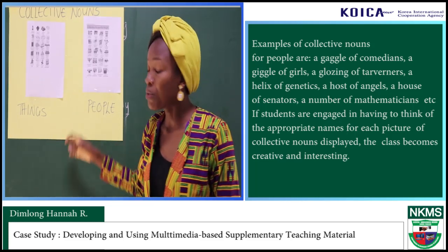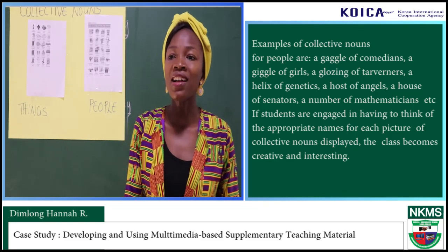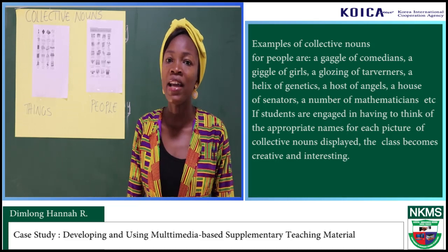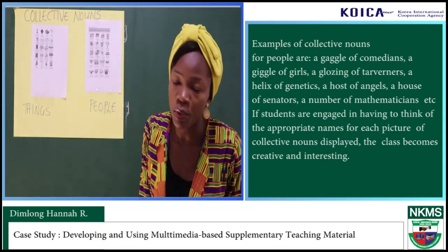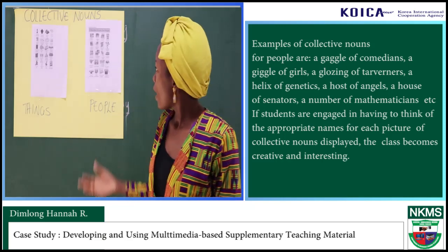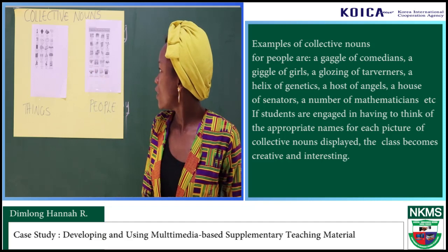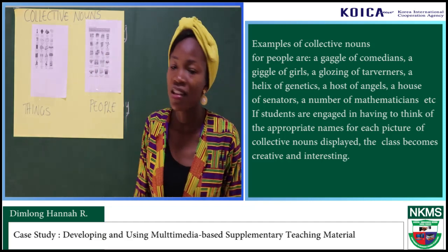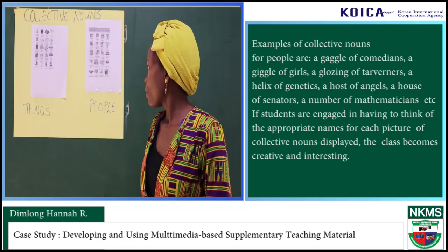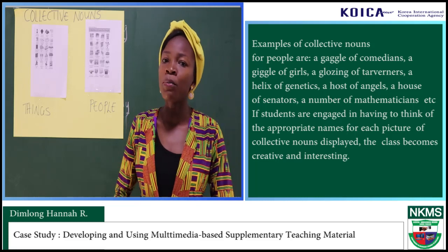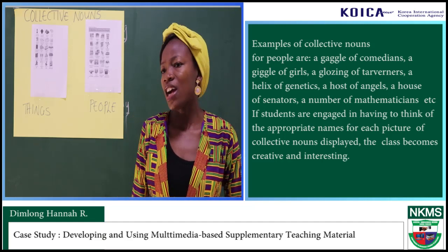The keywords or captions under each of these pictures can be blanked out, and students would be asked to identify the collective nouns by their correct or appropriate terms. We also have collective nouns for people — for example: a gaggle of comedians, a giggle of girls, a host of angels, a house of senators, a number of mathematicians. If students are engaged in thinking of the appropriate name to suit each collective noun, the class becomes creative and interesting.